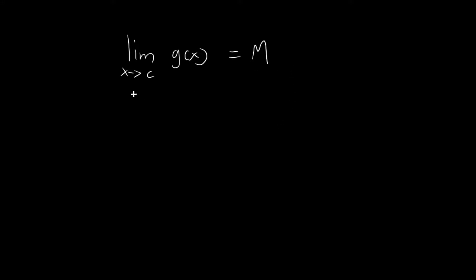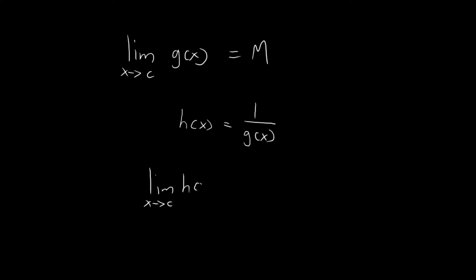In this video, I'm going to prove the reciprocal law. So given that we have a function called g, where the limit as x tends towards c is equal to m, I'm going to define another function called h, where h of x is defined as 1 over g of x. And then what I want to prove in this video is that the limit as x tends towards c for h of x is equal to 1 over m.